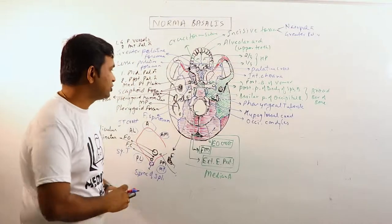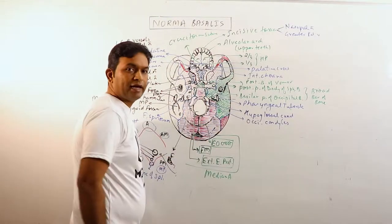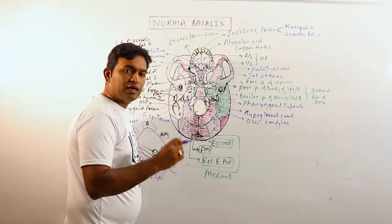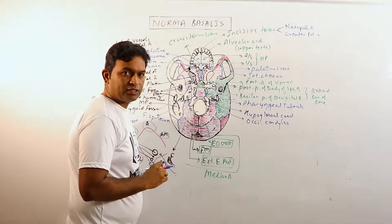Occipital condyles are oval in shape and these are directed anteriorly and medially. These form the atlanto-occipital junction with the atlas, specifically with the superior articular facets of atlas.